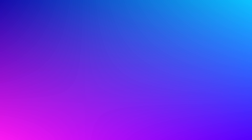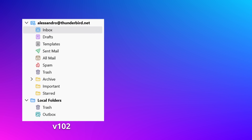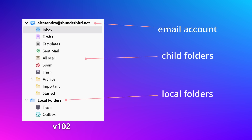First of all, let's take a look at the current folder pane. This is a screenshot from version 102, the current ESR. Pretty standard — we have the email account as the parent item with underneath all its folders. Moving down, we can find the local folders. And if you add another account, it will appear underneath, but you can reorder them from within the account settings.